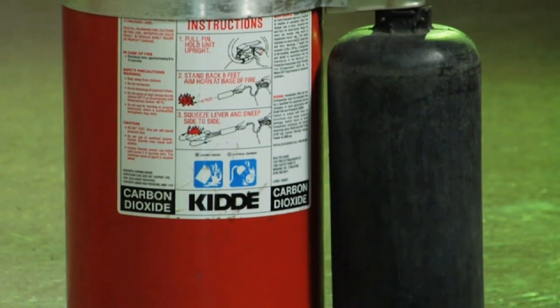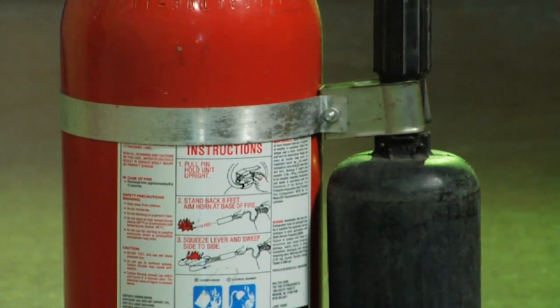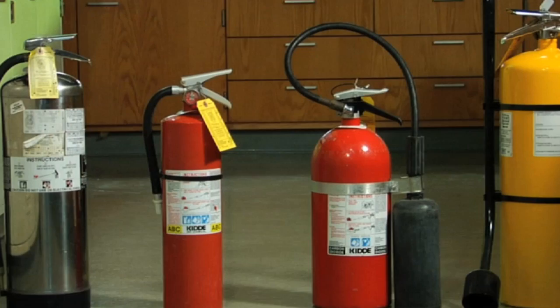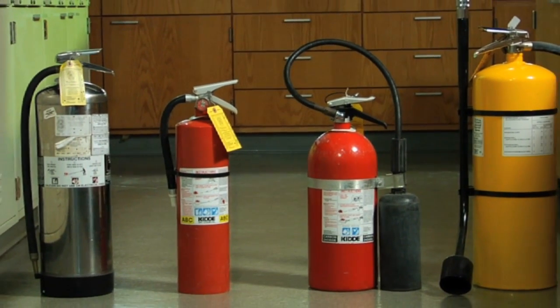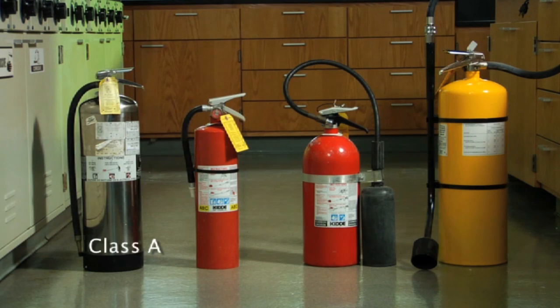Know how to select the appropriate fire extinguisher. Read the label on the fire extinguisher. It identifies the type of fire it can be used for. Fires are classified according to the material that is burning. The types of fire extinguishers used in a lab are Class A, Class B, Class C, and Class D.